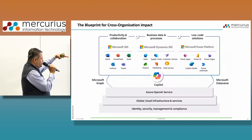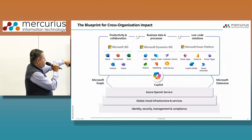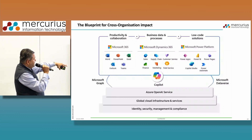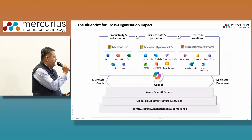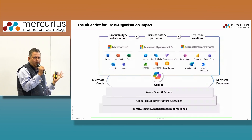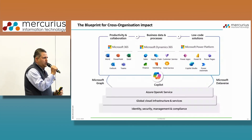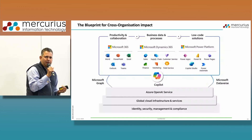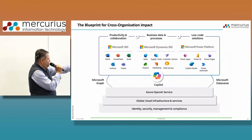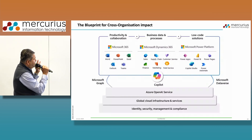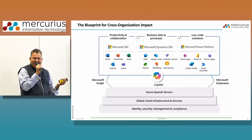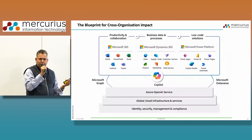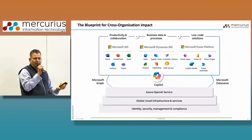Everything discussed is divided into three silos from Microsoft Dynamics. The first — which you'll recognize — is productivity and collaboration tools: Word, PowerPoint, Excel, Outlook, and Teams. Connected to that is the business data and processes layer, where our Boltrix application for 3PL sits alongside Dynamics 365 CRM applications — sales, customer service, marketing, and finance. The third is the Power Platform: a low-code solution from Microsoft for creating apps, Power BI dashboards for data analytics, and Power Automate for automating workflows.